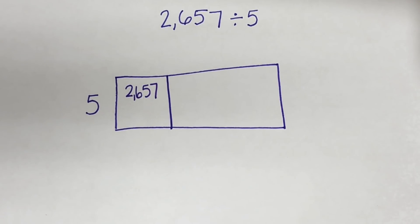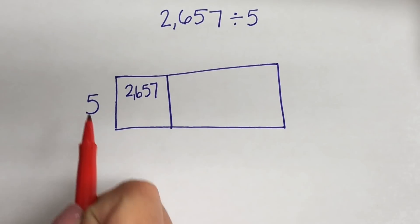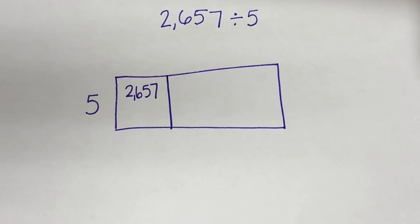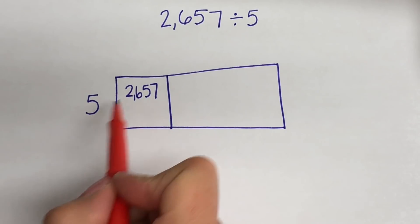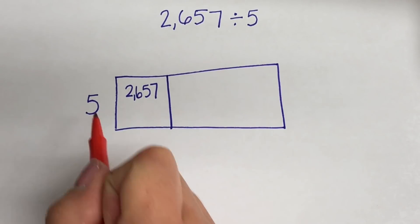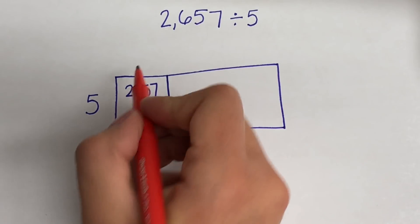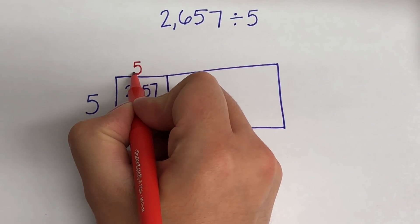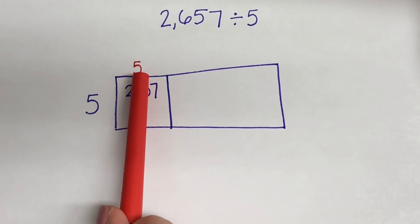Now we have to start our dividing. So we need to ask ourselves, how many times does 5 go into 2? Well, it doesn't. So let's go on to 26. How many times does 5 go into 26? And all of you know that it is 5. So 5 goes into 26 five times because 5 times 5 is 25.